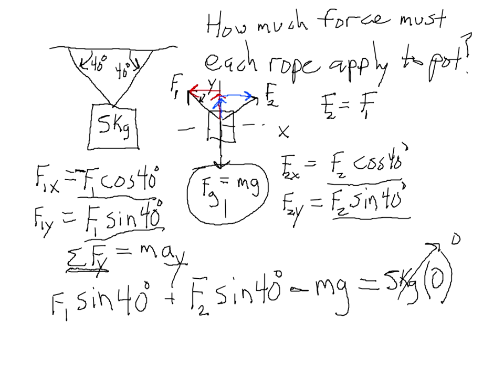Now, I'm going to use the fact that F2 is equal to F1. So, let's plug that in right here and plug in F1. So, I have now F1 sine 40 plus another F1 sine 40.